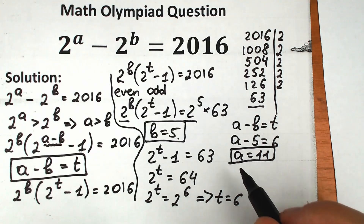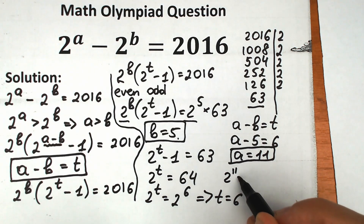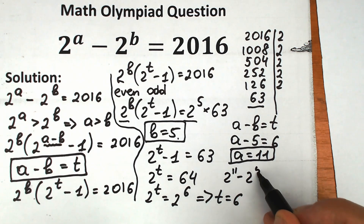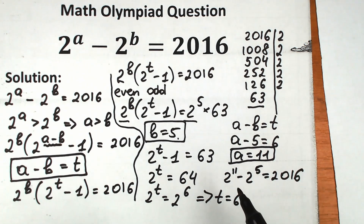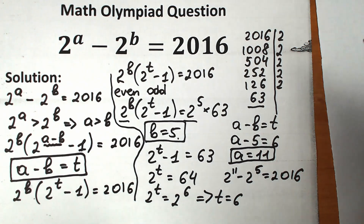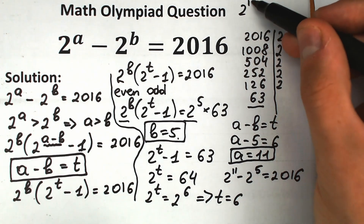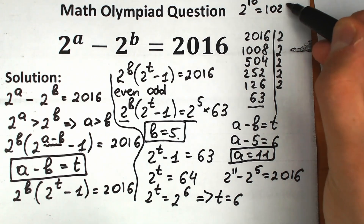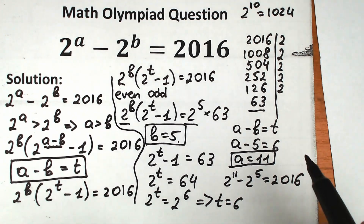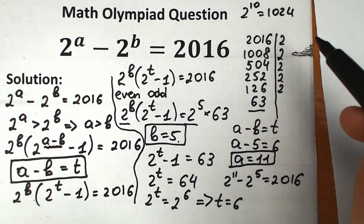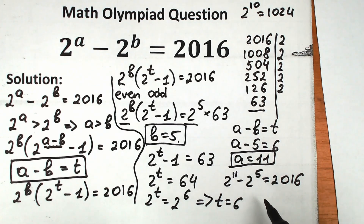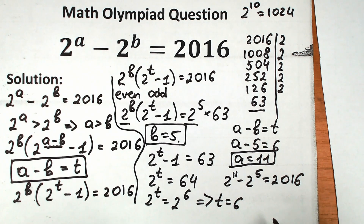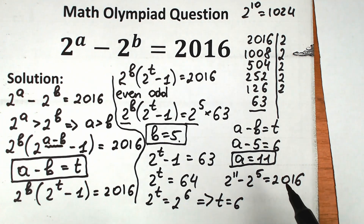Let's verify: 2 to the power 11 minus 2 to the power 5 should equal 2016. We know 2 to the power 10 equals 1024, so 2 to the power 11 equals 2048. Then 2048 minus 32 equals 2016. This confirms our solution is correct.